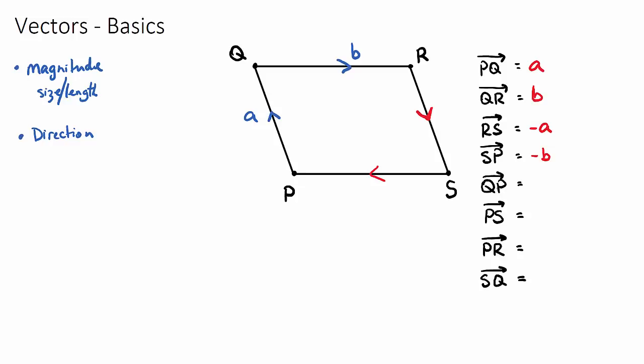Now, if we want to go from Q to P, so Q to P, this would just be the same as vector A but in the opposite direction. So this would be negative A.